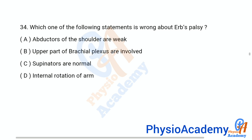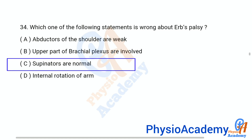Question number 34: Which one of the following statements is wrong about Erb's palsy? Option A abductors of the shoulder are weak, option B upper part of the brachial plexus is involved, option C supinators are normal, option D internal rotation of arm. The correct answer is option C, supinators are normal.